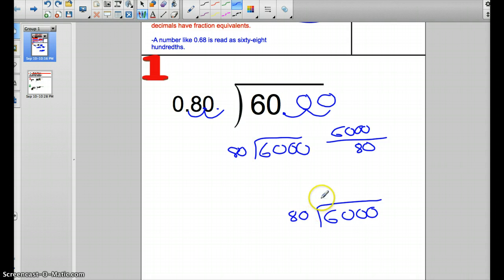80 goes into 6, it can't. 80 can't go into 60. 80 can go into 600 seven times. 80 times 7 is 560. There's 40 left over. 80 can't go into 40. Bring the zero down. 80 can go into 400 five times. This gives us 75. So 60 divided by 0.80 equals 75.